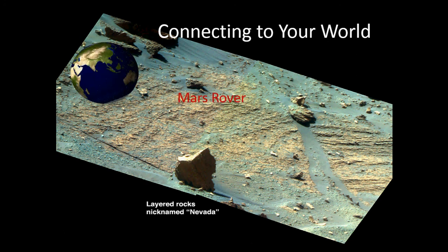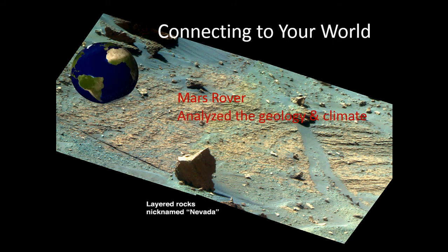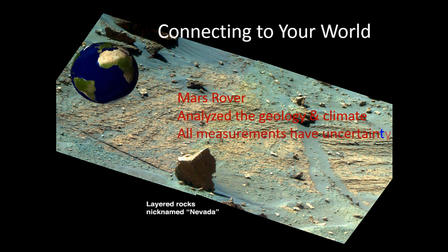You might remember that the Mars rover, when it landed on Mars, one of its jobs was to analyze the geology as well as the climate by making measurements. And all those measurements have an uncertainty. So even though they came up with a number, there's always a plus or minus to that number.